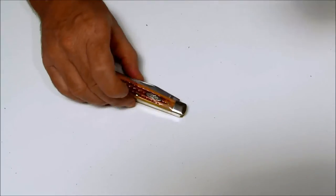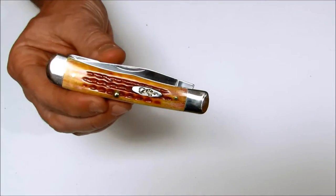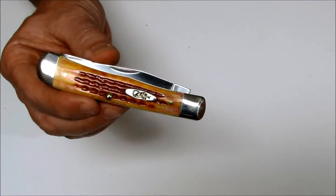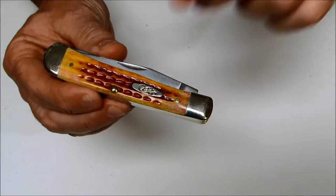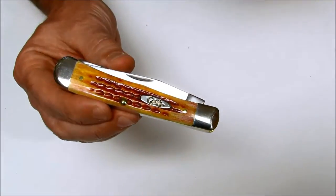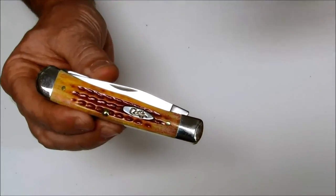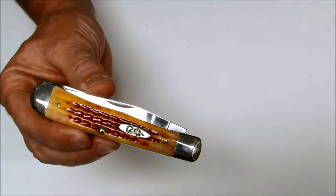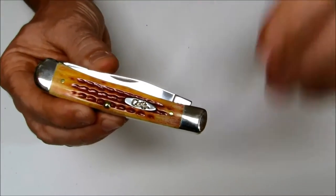Today on Oso Grande Knives TV we're looking at the Case Trapper. This is the pocket worn harvest orange jig bone handles pattern, model number 7401, and this is patterned after the 6254 SS pattern.